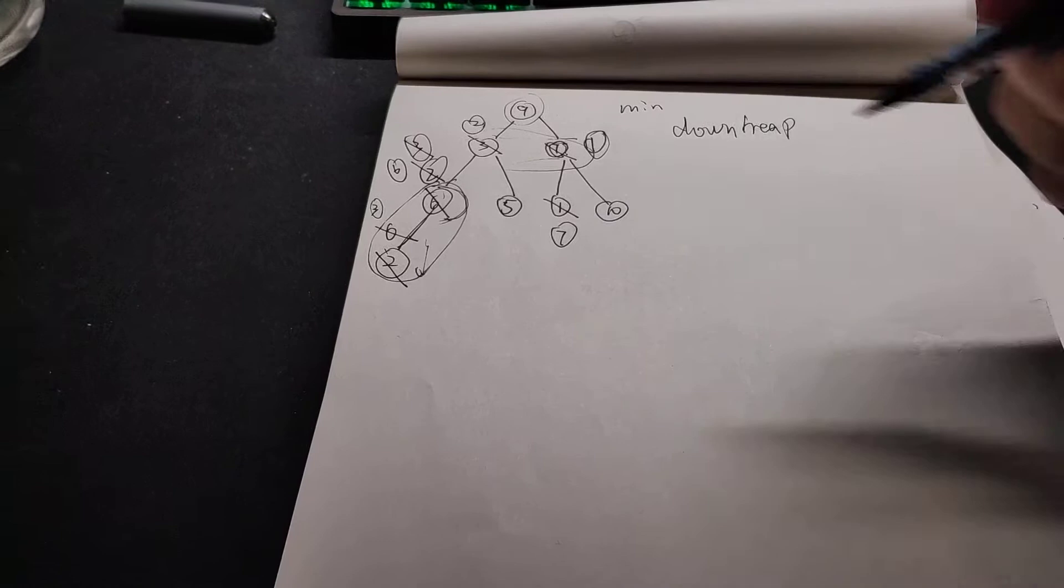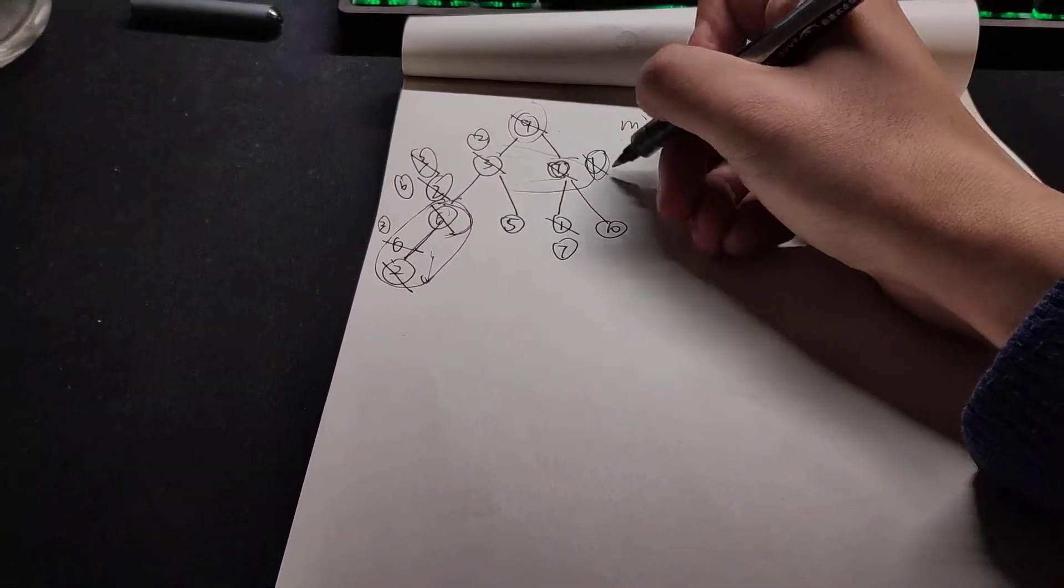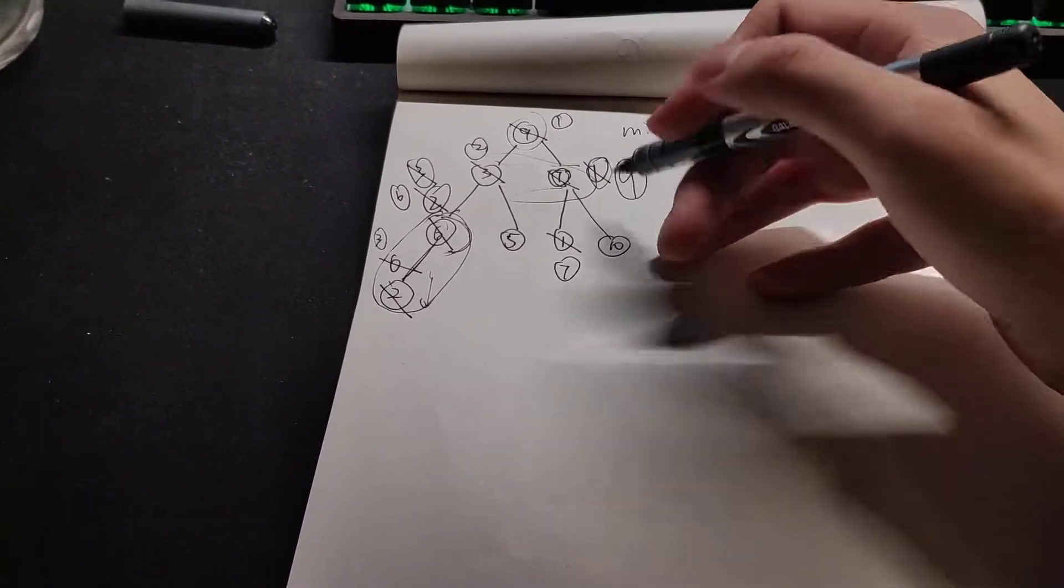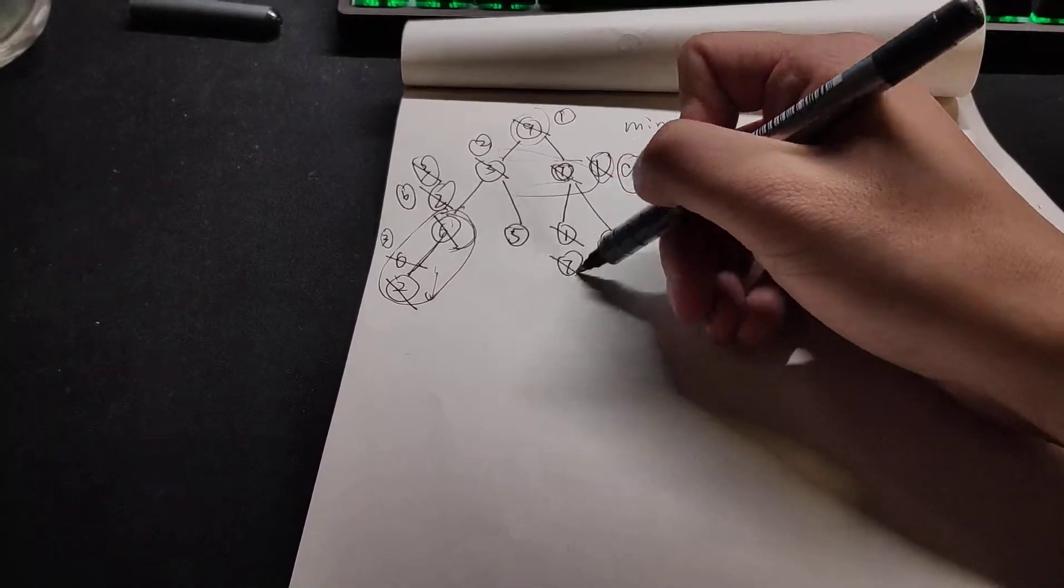So it will go down, go to the right. So it will go like this. And then we find the seven is smaller than the nine, so it will go here.